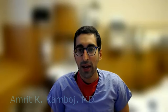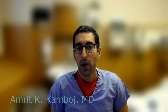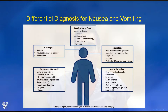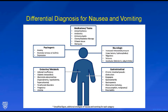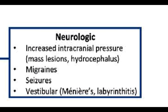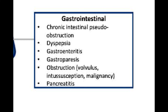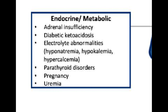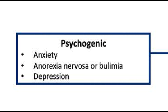The differential diagnosis for nausea and vomiting is broad, and this figure demonstrates the various etiologies, ranging from medications and toxins, neurologic causes, gastrointestinal causes, endocrine and metabolic etiologies, and psychogenic causes.